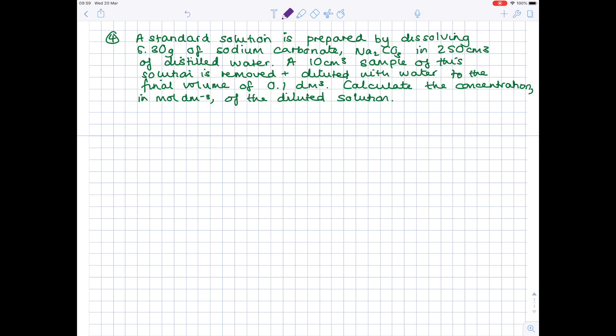And the final question we're doing in this video is to do with the concentration of standard solutions. So a standard solution is prepared by dissolving 5.30 grams of sodium carbonate, Na₂CO₃. A 10 cm³ sample of this solution is removed and diluted with water to the final volume of 0.1 decimetres cubed. Calculate the concentration in moles dm⁻³ of the diluted solution.